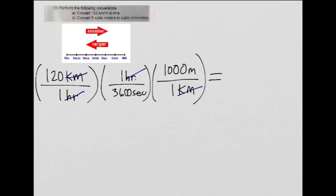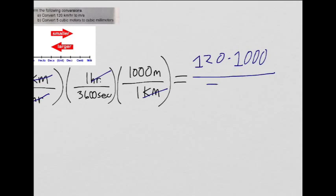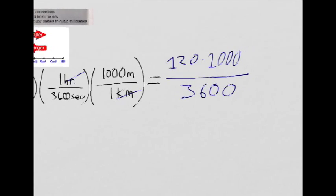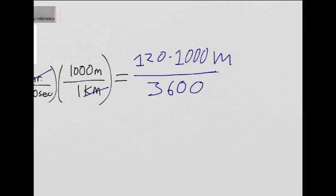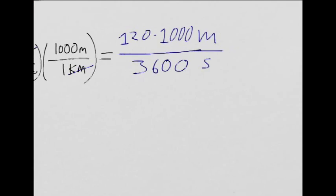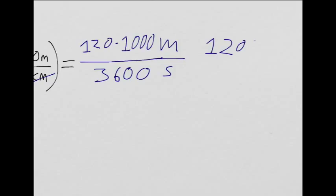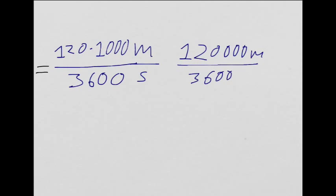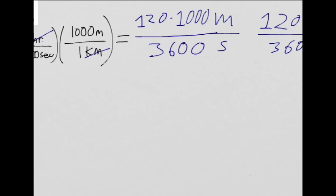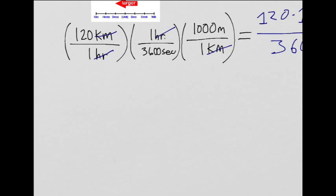So it should be 120 times 1000 over 3600, meters per second. If we do that math, we should get 120,000 over 3600 meters per second, which comes out to 33.3 repeating, but we round to three significant figures, which is just 33.3 meters per second.